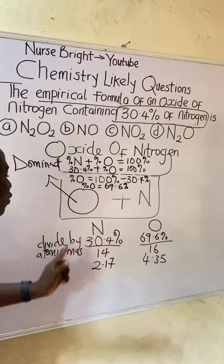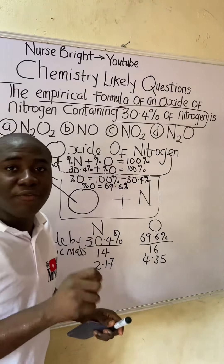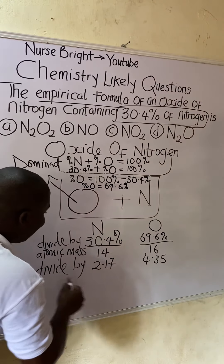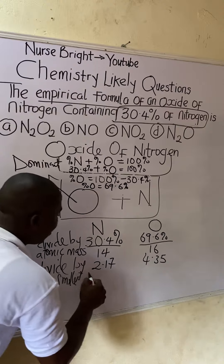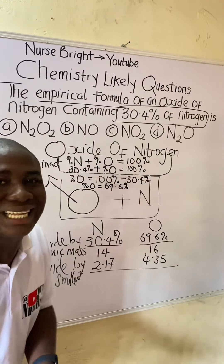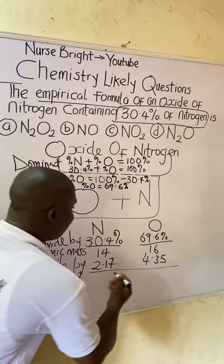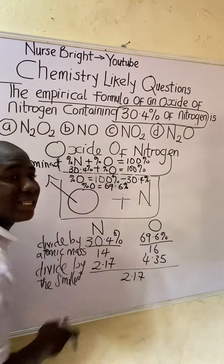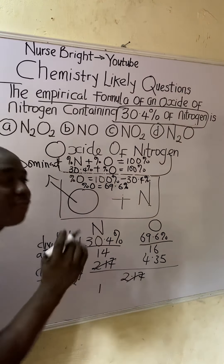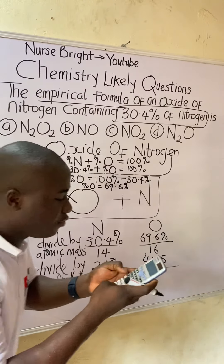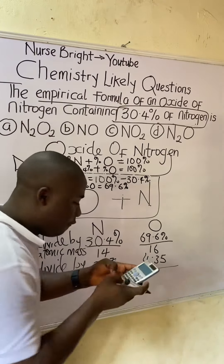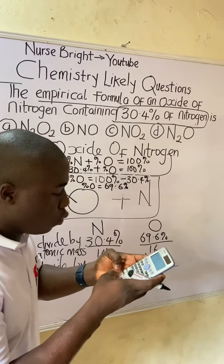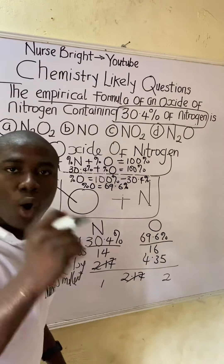The next step when determining the empirical formula is to divide by the smallest value. Comparing both numbers, 2.17 is smaller. So divide both by 2.17: 2.17 divided by 2.17 equals 1, and 4.35 divided by 2.17 equals 2.